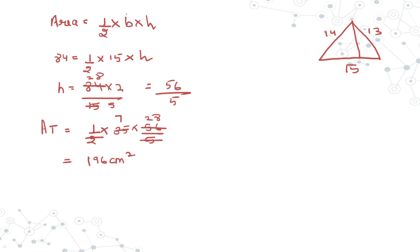We are done with Chapter 12, Heron's Formula. The key approach was: use Heron's formula to find the triangle area, then derive the height, and finally apply the trapezium area formula. We are going to start with the next lesson in the very next video. Stay tuned and please like, share, and subscribe to our channel Edustep. Thank you so much.